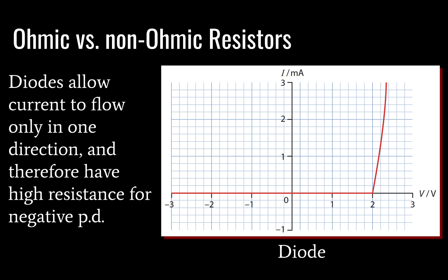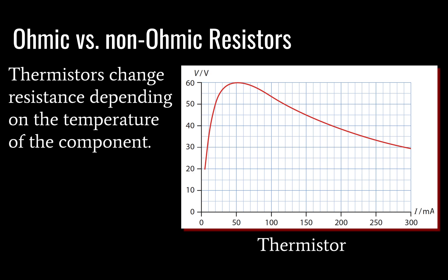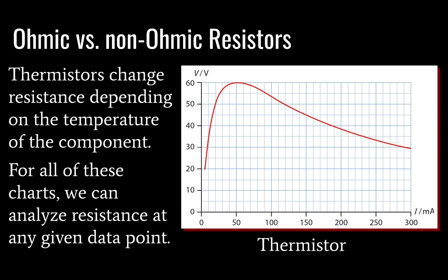The current versus voltage for a diode is relatively consistent — you get a nice sharp spike. These are very useful in electronics, as we'll see continuing through topic 5 and topic 11. You may also be familiar with light-emitting diodes — LEDs — which are diodes that emit light. You undoubtedly have many LEDs in your house right now. Another example of a non-ohmic resistor is called a thermistor, where resistance changes depending on the temperature of the component. For any of these charts, we can analyze resistance at any given data point by taking the voltage and dividing it by the current at that point.